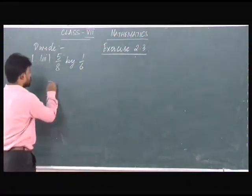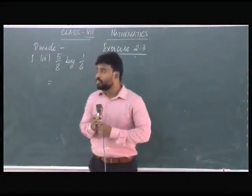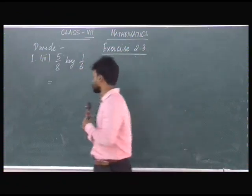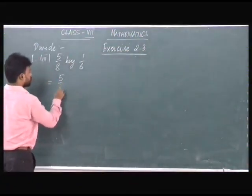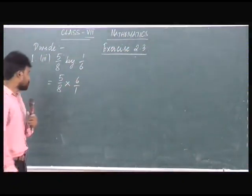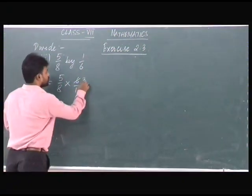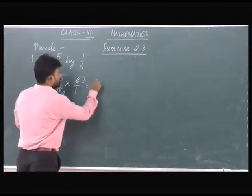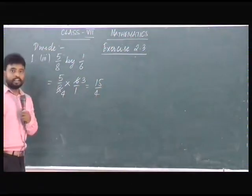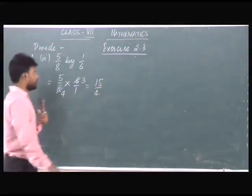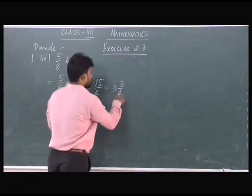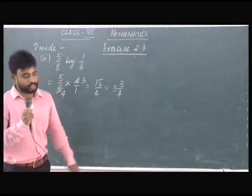In order to divide, we have to find out the reciprocal of 1/6. So this will become 5/8 multiplied by 6/1. We can cancel this. So ultimately your answer will be 15/4, and that can be written in mixed fraction as 3¾.